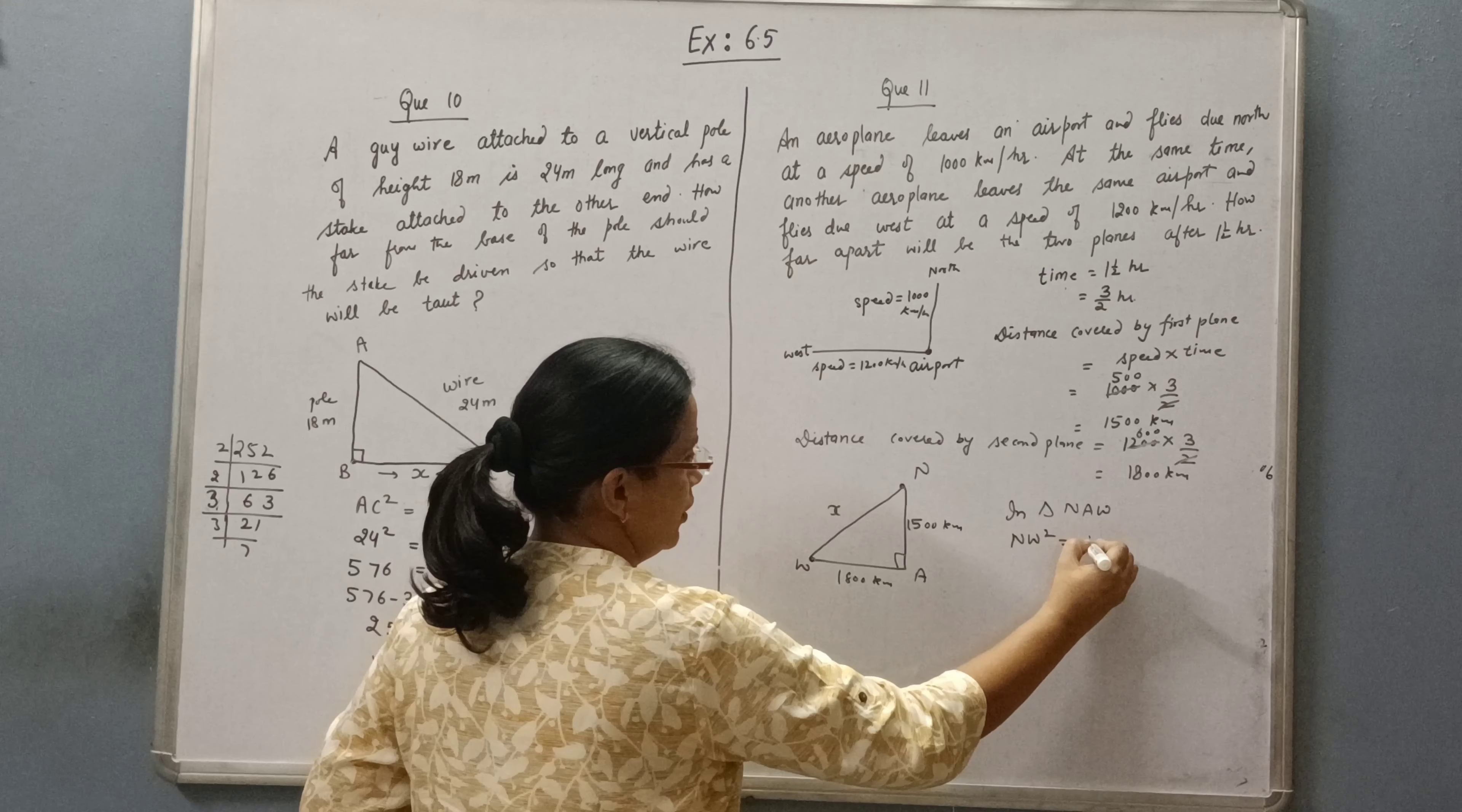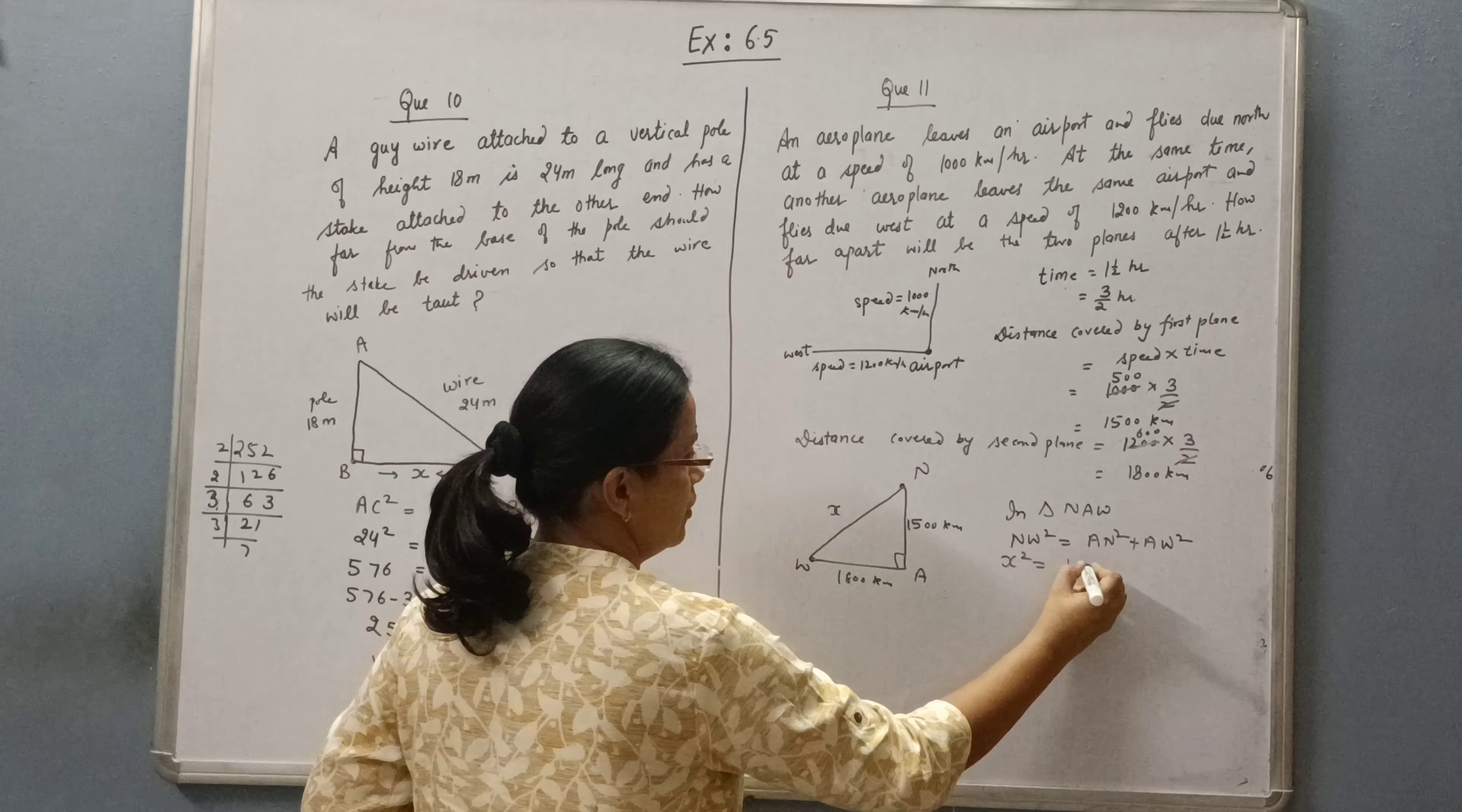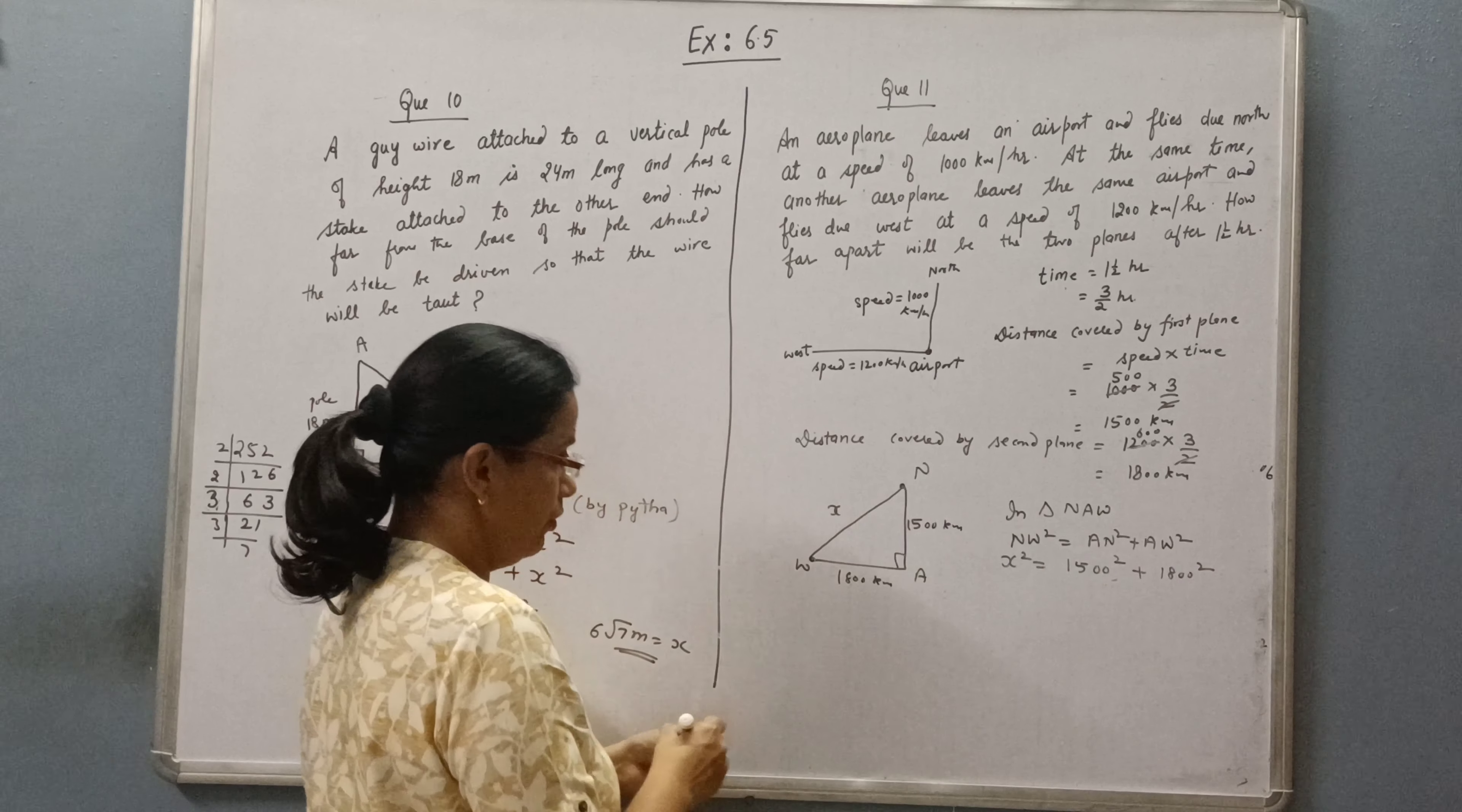NW square is equal to AN square plus AW square. This is X. This is 1500. This is square of 1800. Now we solve it.